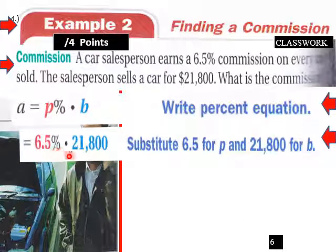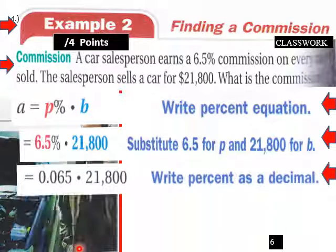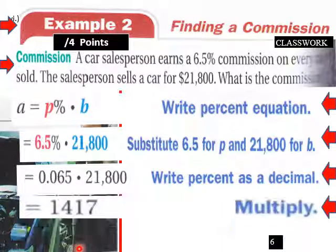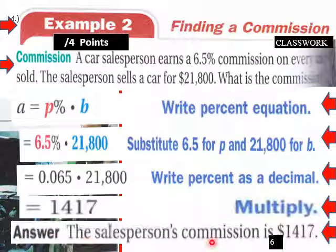So 6.5 percent times $21,800. So what is that? That's $1,417. So that's what he earned on that sale of a car.